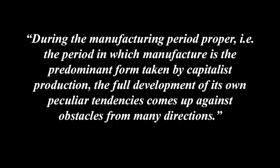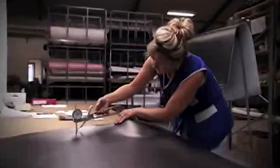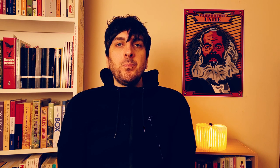During the manufacturing period proper — the period in which manufacture is the predominant form taken by capitalist production — the full development of its own peculiar tendencies comes up against obstacles from many directions. Finally, Marx notes that despite all this, capital was still unable to obtain complete domination over the production process. Manufacture still relies and is dependent upon the hands and skill of the labourer, so labourers still asserted some control. But the manufacturing process itself created the very things that would revolutionise production: machines.